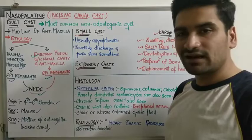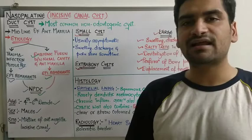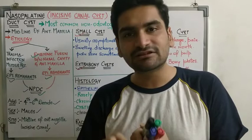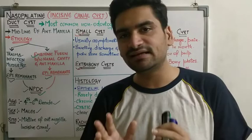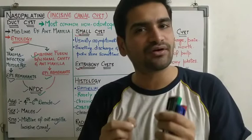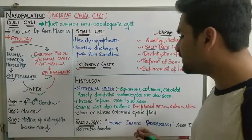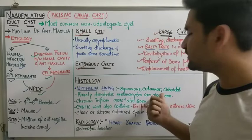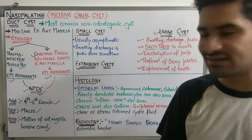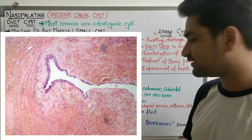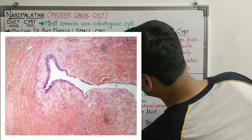Moving on to histology: since this is a cyst, it will have an epithelial lining, a cystic cavity, and connective tissue. The epithelial lining will have squamous, columnar, or cuboidal type cells depending upon the location of the cyst in the canal. You can also see a combination of all three types — squamous, columnar, and cuboidal cells.